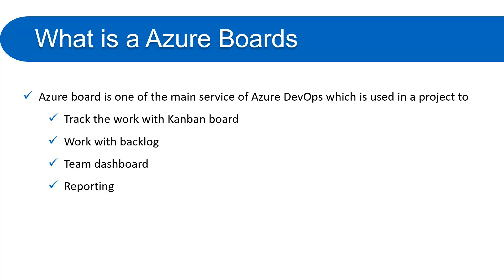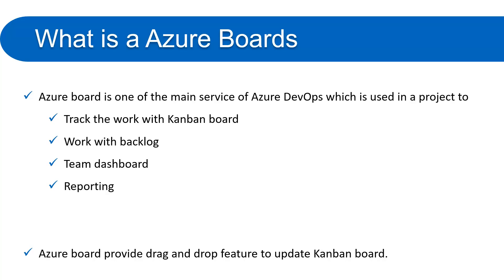When working on product development, the PO or the responsible person has to create a backlog. The backlog will have all the work items which need to be delivered in the current or upcoming sprint. In Azure Boards you can have all the details of the backlog. There may be multiple teams working in a particular project, and Azure Boards provides a board for each team. For reporting, it provides different types of charts and reporting systems.